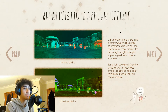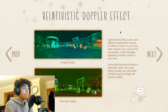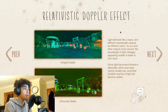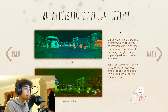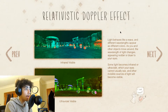The perceived frequency and wavelength changes. As you and other objects move around, the wavelength of light changes, appearing redder or bluer to your eyes. Some light becomes infrared or ultraviolet, which your eyes cannot usually see.